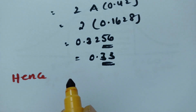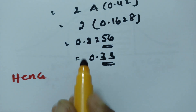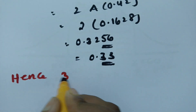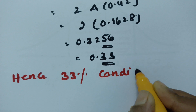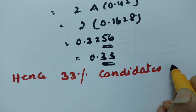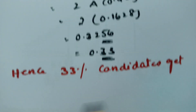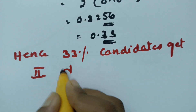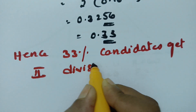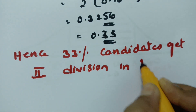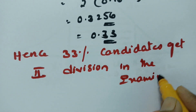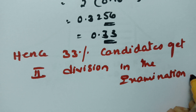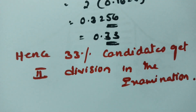Hence, approximately 33 percent of candidates get second division in the examination.